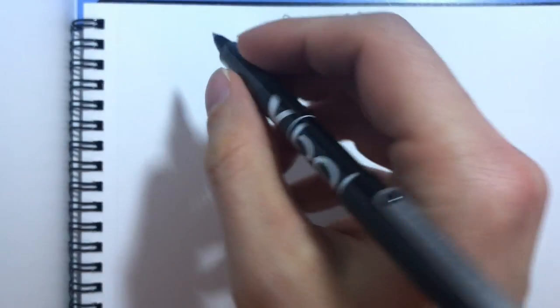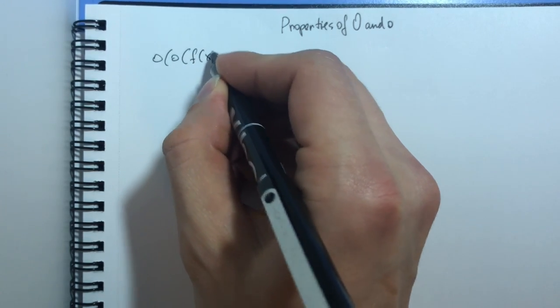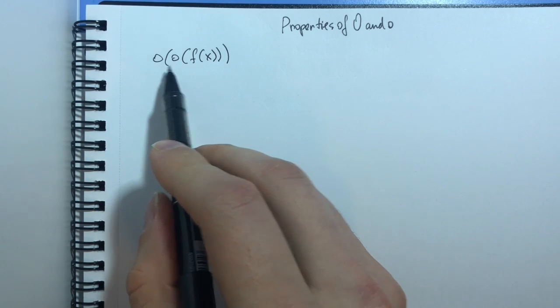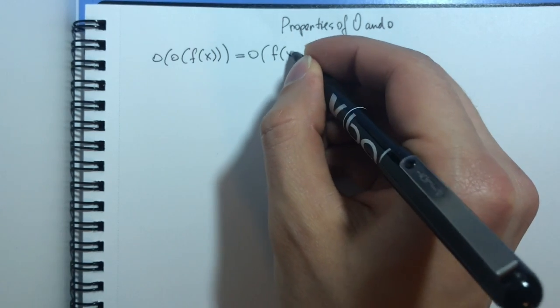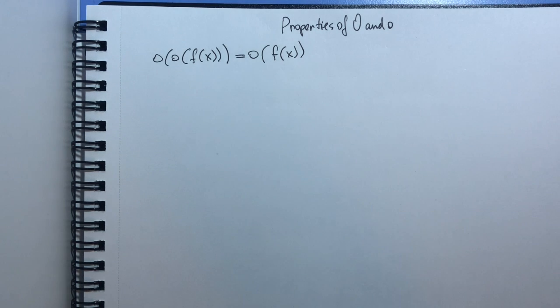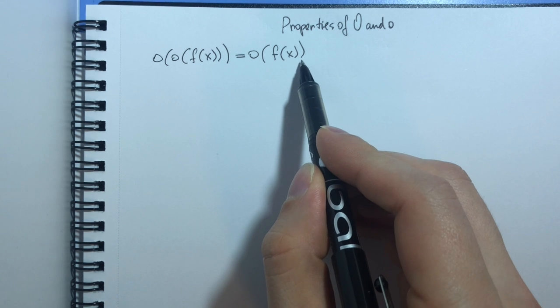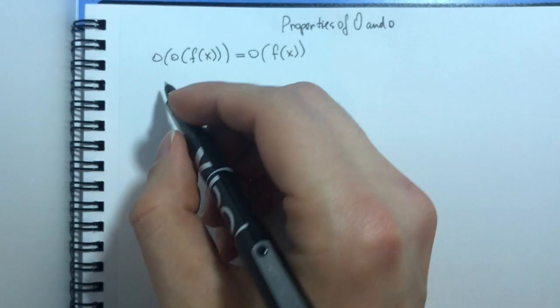Let us now discuss some properties that big O and small O notation give us. The first one is the following. If we have a function that's double little o of f of x, then it's actually the same as single little o of f of x. When I just write little o of f of x, I mean any function that is equal to little o of f of x.